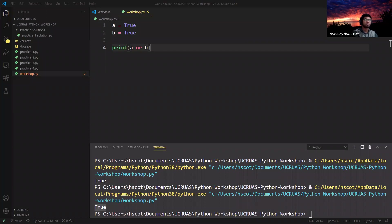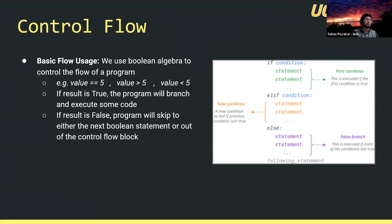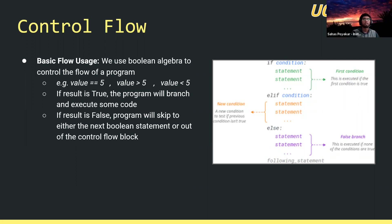We can carry on to how we can apply this further in something called control flow. Control flow is a way to enable us to run certain sections of code based on a Boolean algebraic equation. We use Boolean algebra to control the flow of our program, and we do this using if conditionals, elif conditionals, and else conditionals. If a Boolean algebra equation returns a true statement, any code executed underneath the if statement will run. If false, that statement is skipped and we move on with the program.